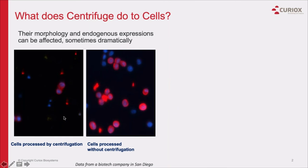Many researchers have taken the centrifugation step for granted as, until recently, it has been the only method to remove excess reagents from suspension cells. But have you considered what centrifugation might do to your cells? In this image showing cells expressing endogenous red fluorescent protein, or RFP, spiked in with non-fluorescing cells, samples washed by centrifuge are observed to be lower in count, distorted in morphology, and importantly, have lower expression of RFP.